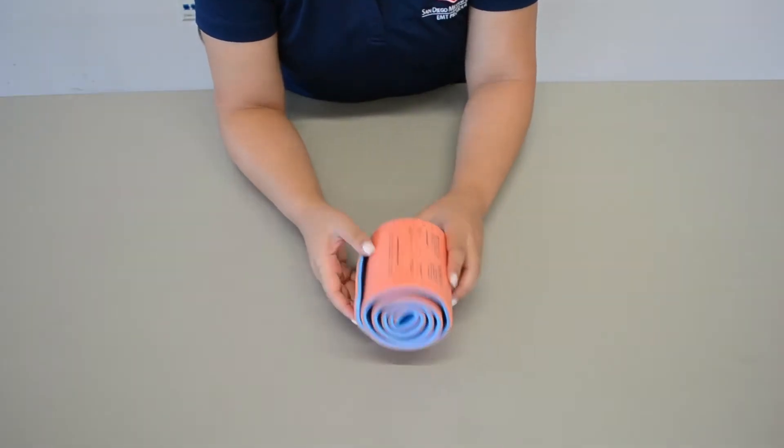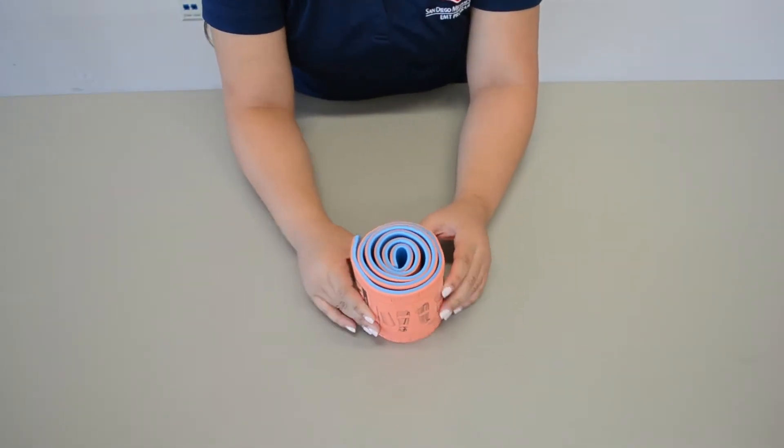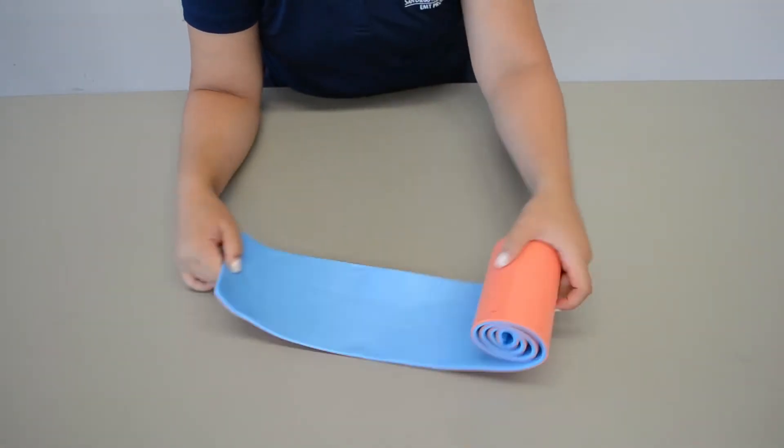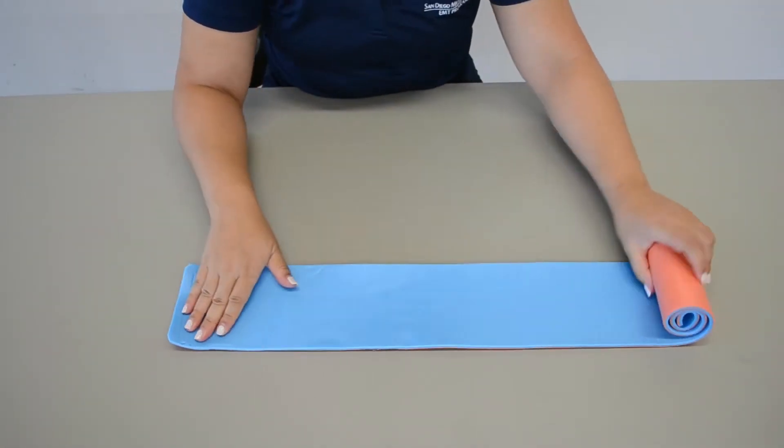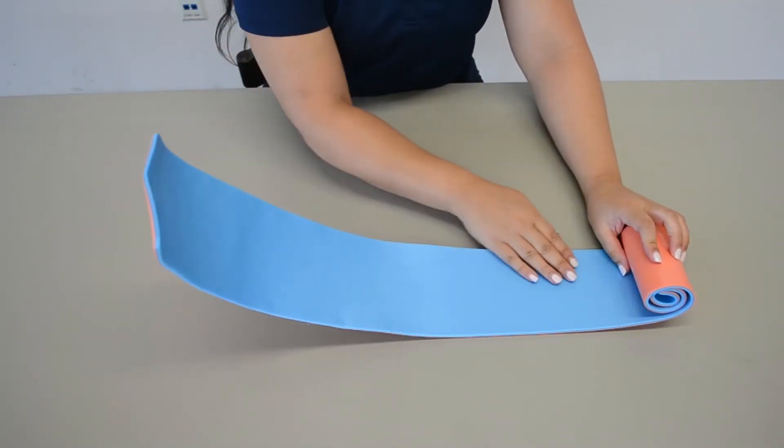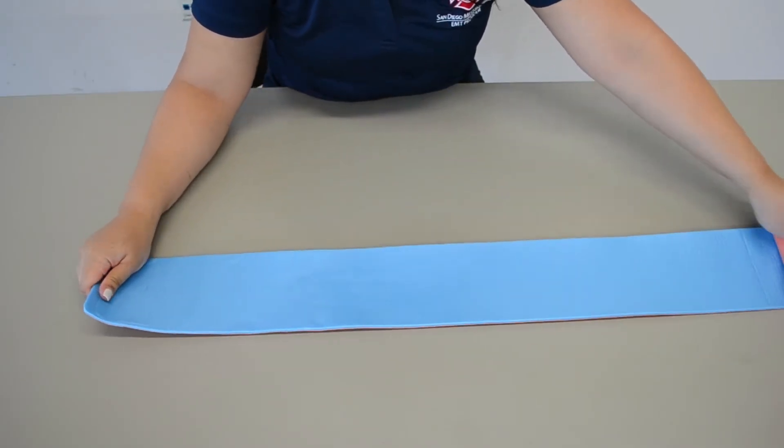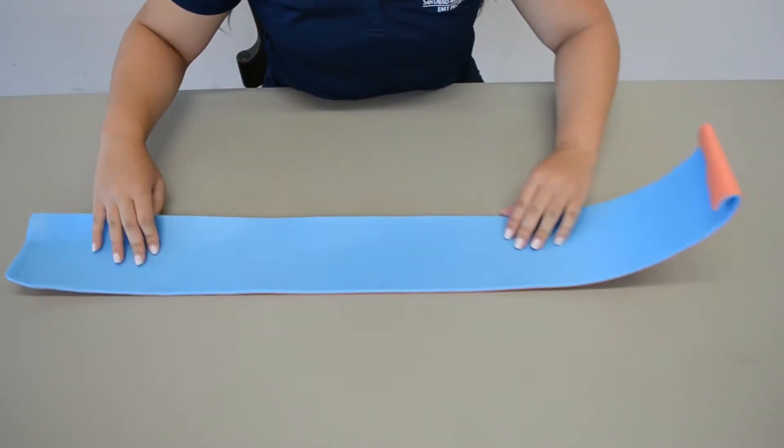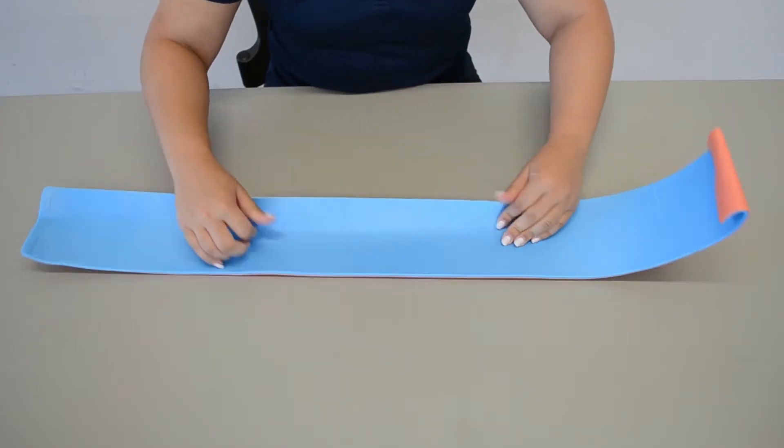Alright, so this is going to be your SamSplint. It's going to come wrapped like this, so you're just going to go ahead and unravel it. The SamSplint has aluminum inside in between these foams, and it's very malleable. You can shape it to any form you'd like.